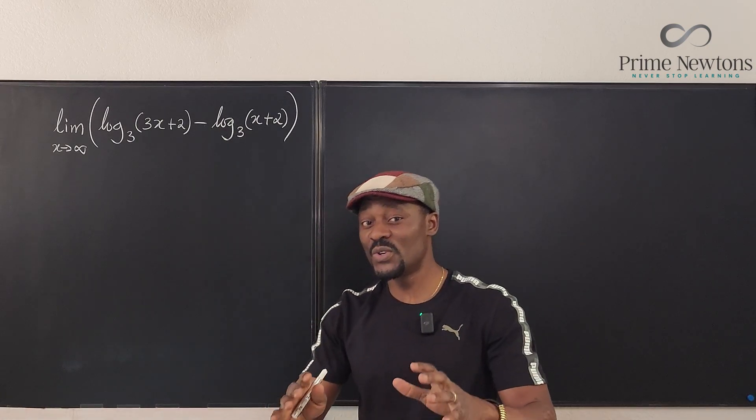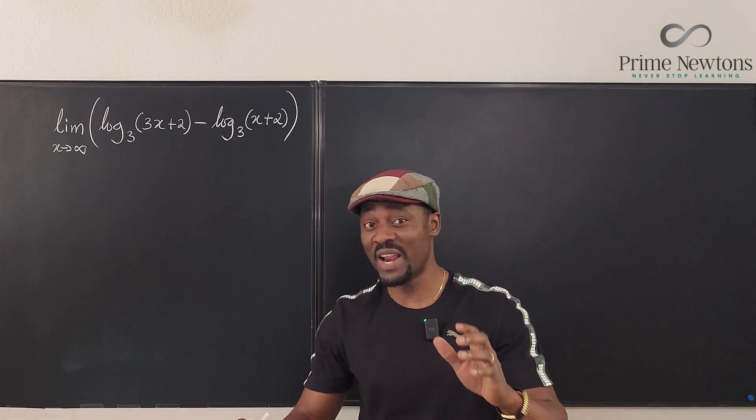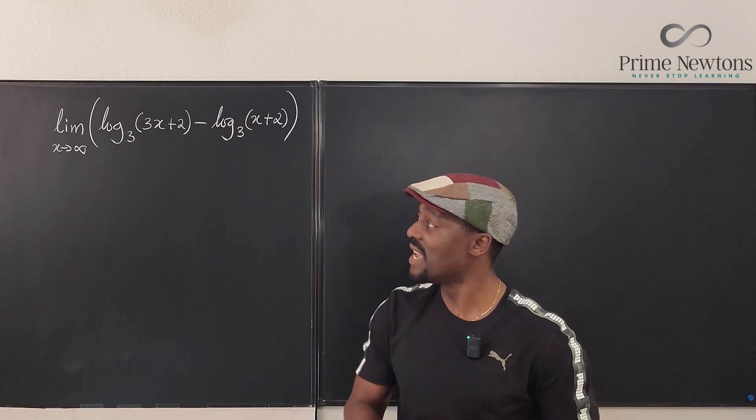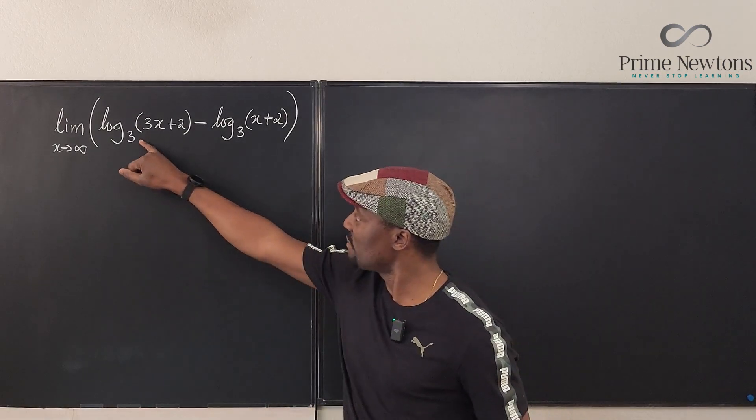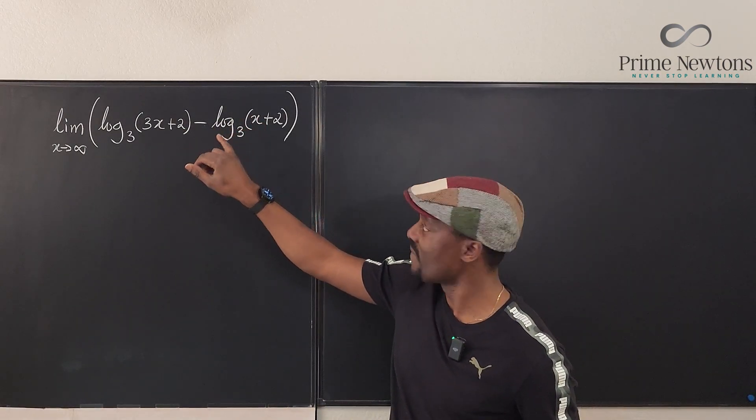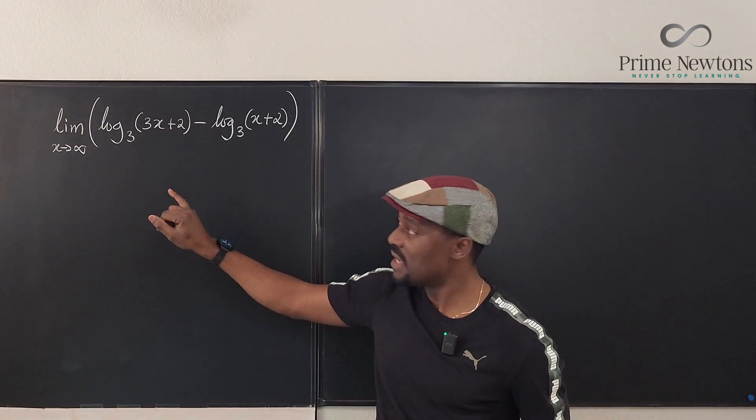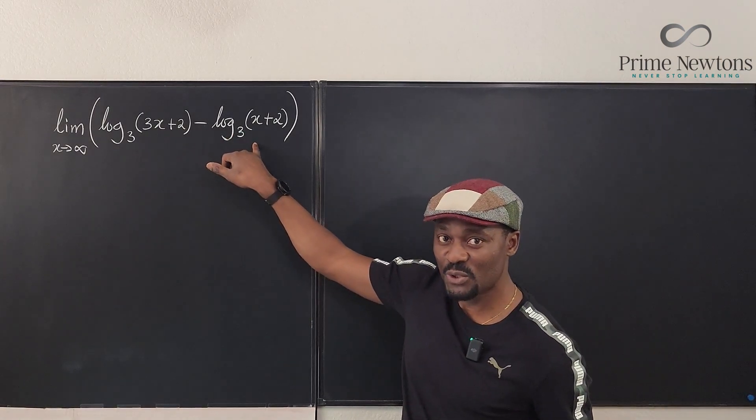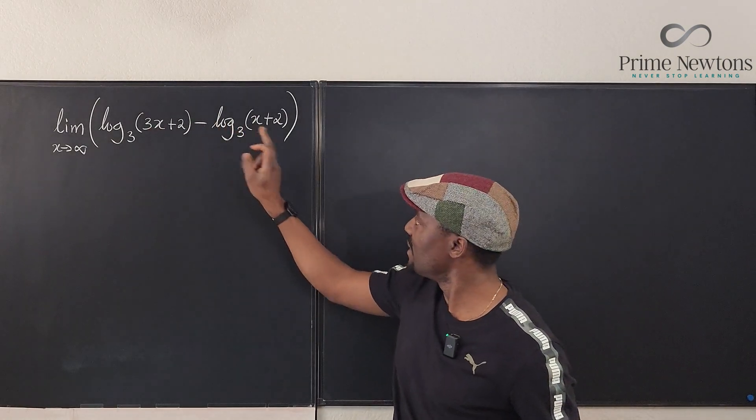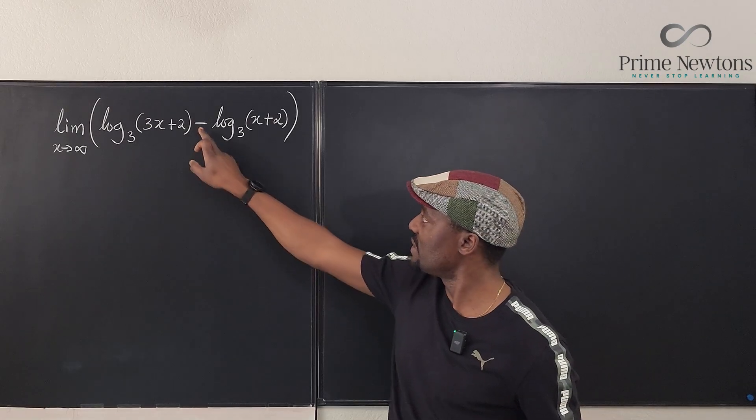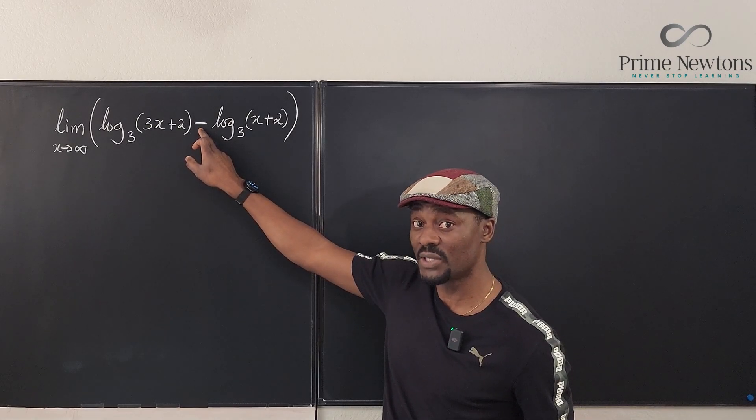Now remember, you can't mess with infinity. Whatever you're doing with infinity has to obviously just be a single term. But whenever you have two functions or two terms such that each of them goes to infinity, because by observation this would go to infinity, this would go to infinity, but there's a minus sign between the two functions.